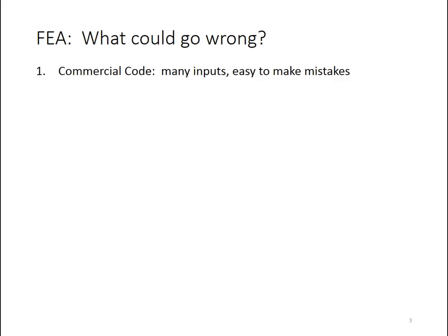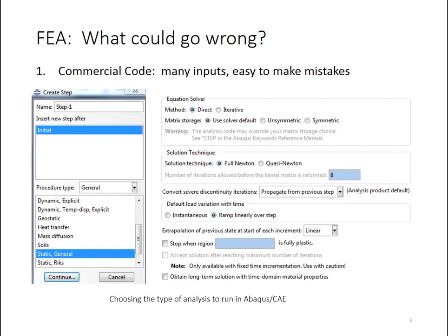One of the major limitations of FEA is that typically analysts use commercial codes. Commercial codes are very powerful. They have lots of different inputs you can put in, and therefore, if you don't know exactly what you're doing, it's easy to make mistakes with those inputs. So here's a quick example of choosing the analysis type. It's actually a fairly straightforward thing to do, but you can see there are a lot of different options to choose from. This is one from Abacus CAE.